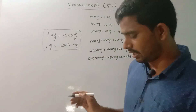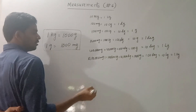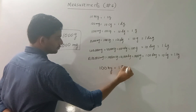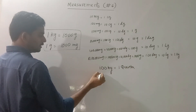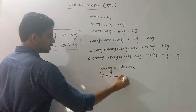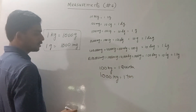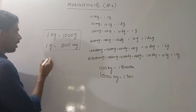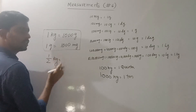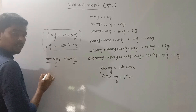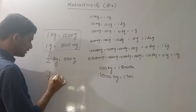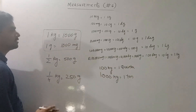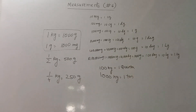Now let's talk about larger units. 100 kilograms is 1 quintal. 1,000 kilograms is 1 tonne. Also, for smaller measurements: 1 half kilogram is 500 grams. 1 quarter kilogram (1 by 4 kg) is 250 grams. If you calculate these, you can test the expressions. Now we have covered the full measurement of weight. If you want to make a note, you will be able to solve weight sums.